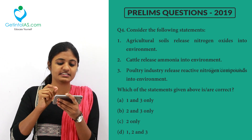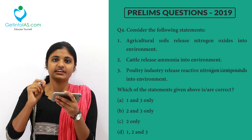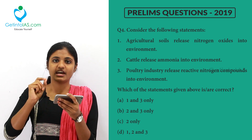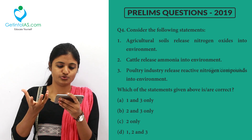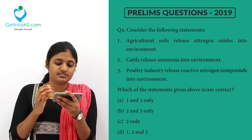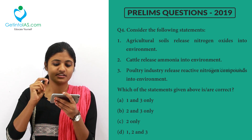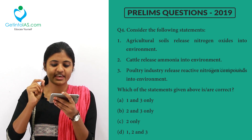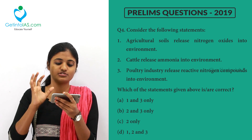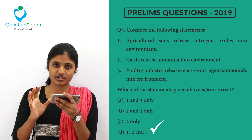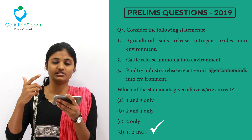Second statement: cattle release ammonia into the environment. Definitely — cattle release ammonia from their waste material in their feces. Third: the poultry industry releases reactive nitrogen components into the environment. This option is also correct because poultry releases reactive nitrogen.